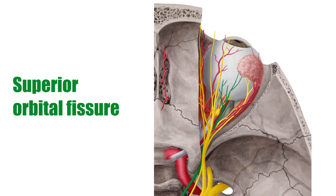Between the body, lesser and greater wings is a large opening known as the superior orbital fissure, where numerous nerves and vessels pass through, including the superior ophthalmic vein, ophthalmic nerve and its branches, abducens nerve, oculomotor nerve, and the trochlear nerve.